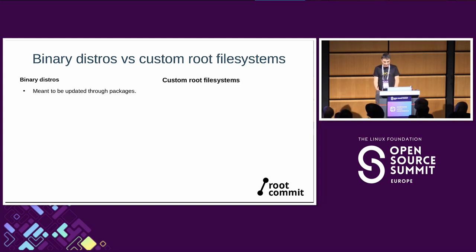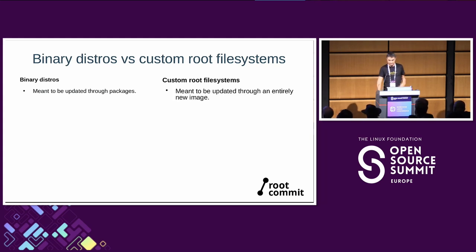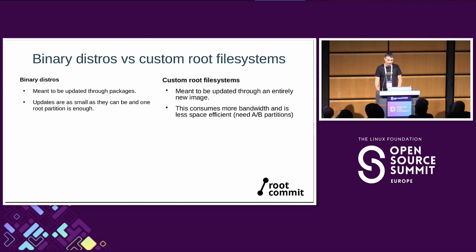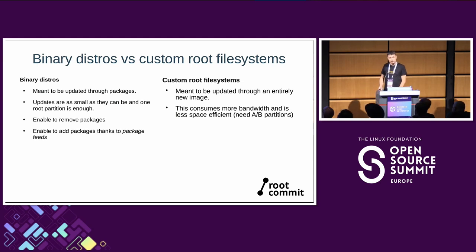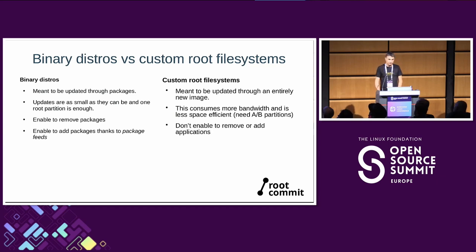Binary distros are meant to be updated by packages — you install a package rather than regenerating the image, which is what you do with a custom root file system where you regenerate one brand new image and flash it. Updates can be very small with binary distros, and one root partition should be sufficient. With custom root file systems you update everything at once, so it's bigger and you typically need two A/B partitions — one active, one for the next update.